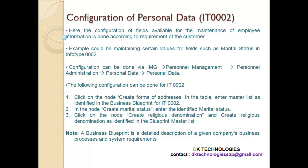Similarly, address apartment number is a free-text field and doesn't require configuration. However, there are some fields for which you have to configure the field values in the back end — only then will those values be shown in the drop-down in the info type. The configuration of fields available for employee information maintenance is done according to the customer's requirement. For example, a customer might say they only need 'single' and 'married' for marital status and don't need 'divorce'.